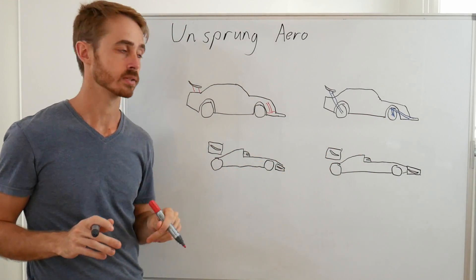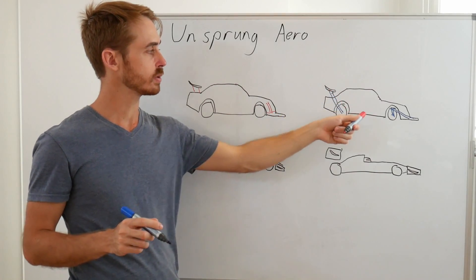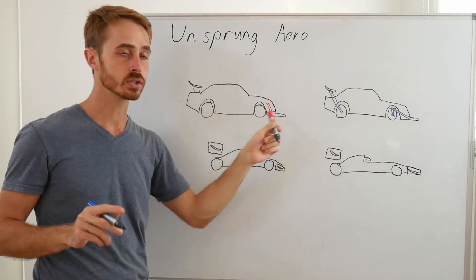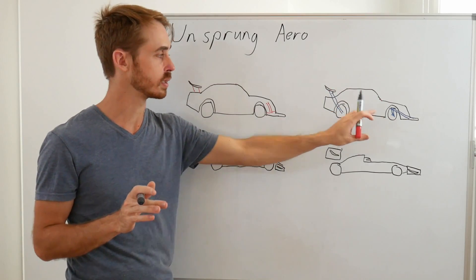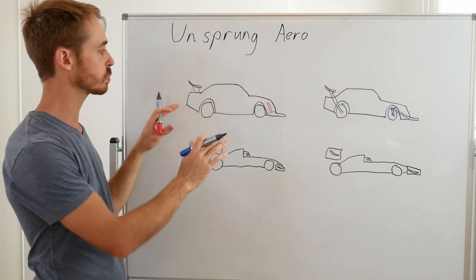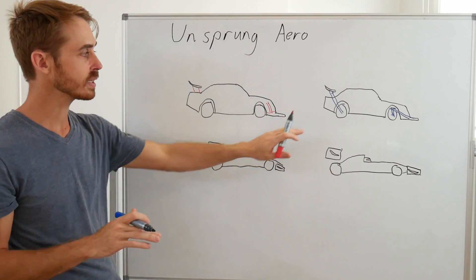Now what does this mean? Two things. Well, one, we're going to see the splitter and the wing stay stationary, well stationary as far as deflection allows, with respect to the wheel and tire assembly, as opposed to in the conventional case where they stay stationary to the body assembly.